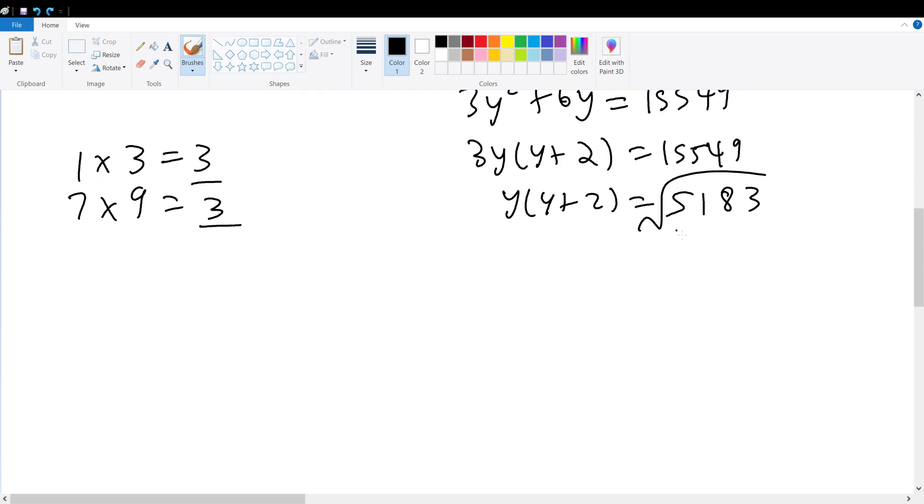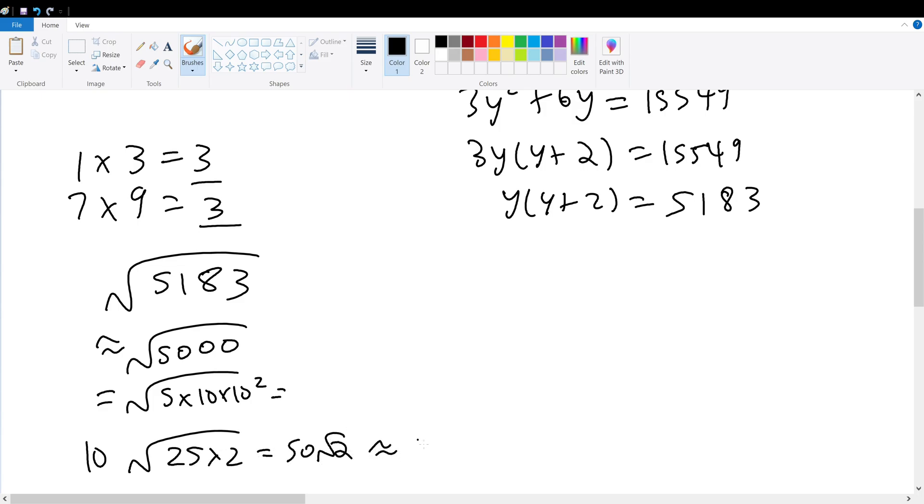So what is the square root of 5183? Well, a rough estimate might be just the square root of 5000, and 5000 is 5 times 1000, and that's times 10 squared, so that's equal to 10 times root 50. Root 50 is 25 times 2, which is 5 times root 2. 50 times root 2, where root 2 is 1.414.